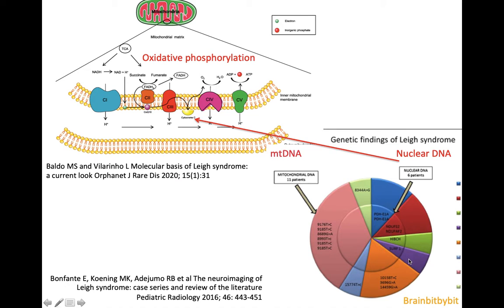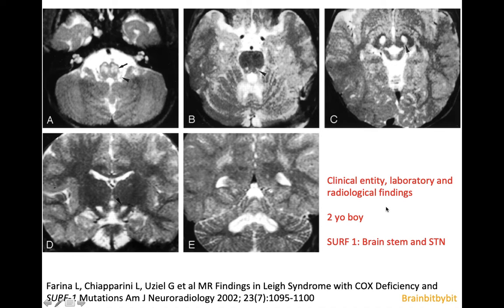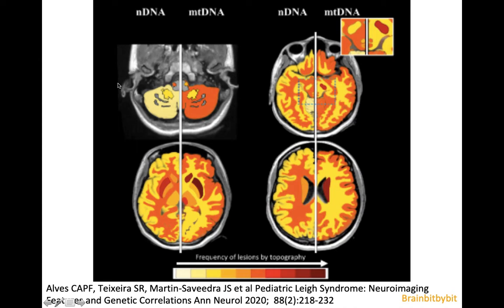About 20 years ago, a group looked for a specific pattern in, for example, SURF-1, a nuclear DNA mutation. These patients had a relatively favorable cognitive profile and MRI abnormalities in the brainstem and subthalamic nucleus, as you can see here. Another article from 2020 from the group from Pennsylvania looked at 53 patients with Leigh syndrome and found that nuclear DNA mutations and mitochondrial DNA mutations correlate with different patterns of MRI abnormalities and clinical profiles.